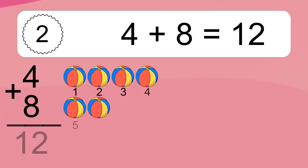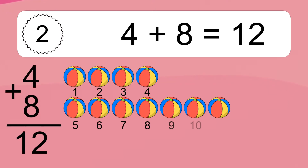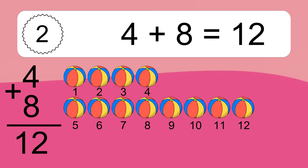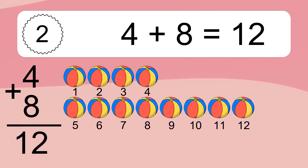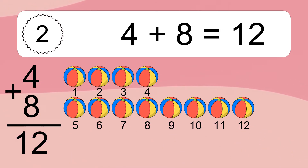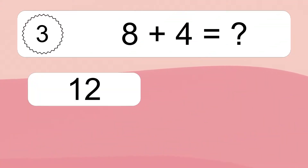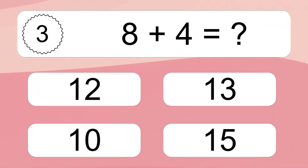4 plus 8 equals what? 4 plus 8 equals 12. Let's count it. 1, 2, 3, 4, 5, 6, 7, 8, 9, 10, 11, 12.